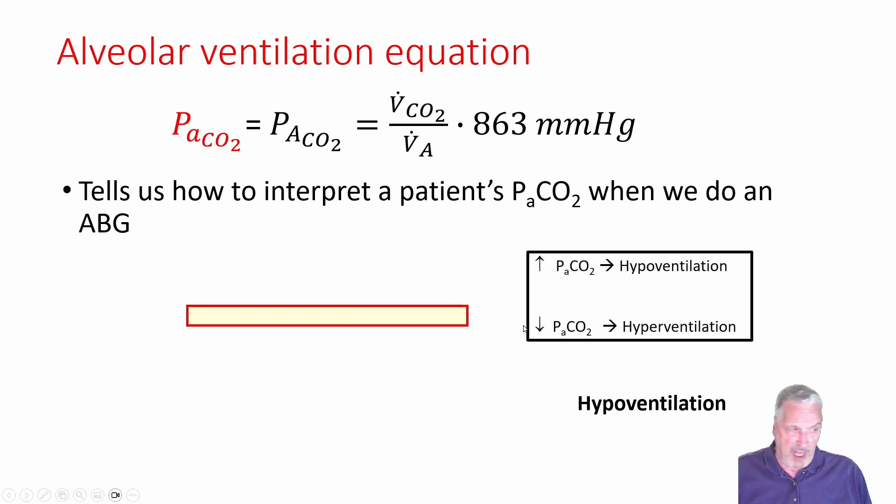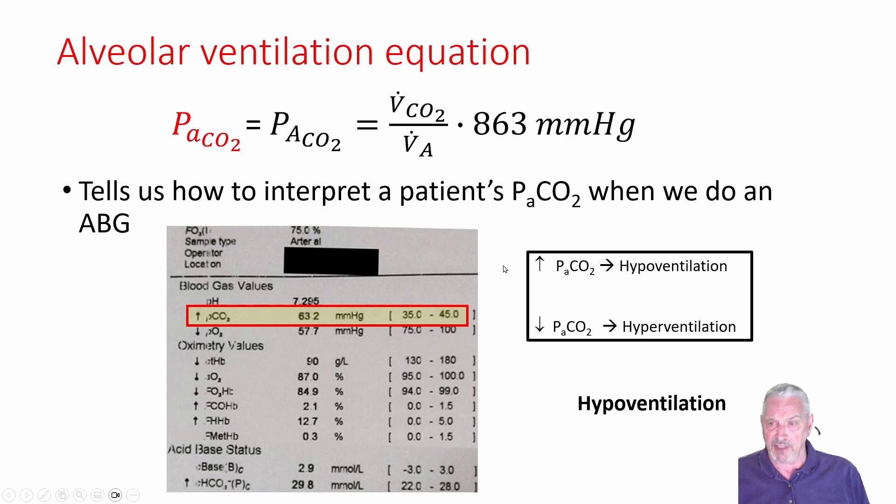So what we know is PaCO2 tells us something about a patient's arterial CO2 value and how to interpret it. And we've learned that an increase in CO2 gets referred to clinically as the patient is hypoventilating. And a decrease in CO2 gets interpreted clinically as the patient is hyperventilating. And for us to do this, let's take a look at just a set of arterial blood gas values I got off of the internet.